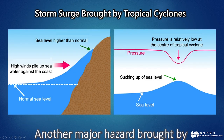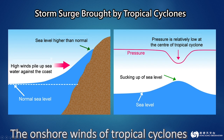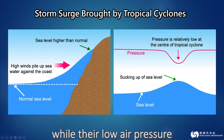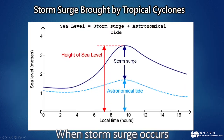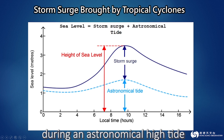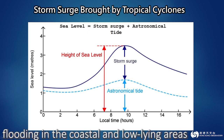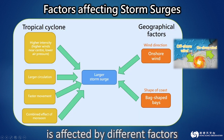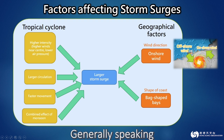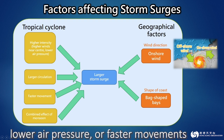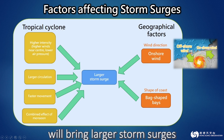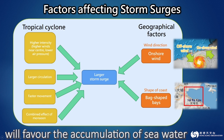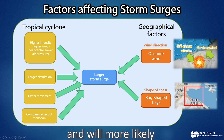Another major hazard brought by tropical cyclones is the storm surge. The onshore winds of tropical cyclones are the main cause of rising water levels, while their low air pressure is the secondary cause. When storm surge occurs during an astronomical high tide, the rising sea water will more likely cause flooding in coastal and low-lying areas. Generally speaking, tropical cyclones which have stronger winds, lower air pressure, or faster movements will bring larger storm surges. Furthermore, bag-shaped bays such as Tai Po Kau will favor the accumulation of seawater and will more likely have a larger storm surge.